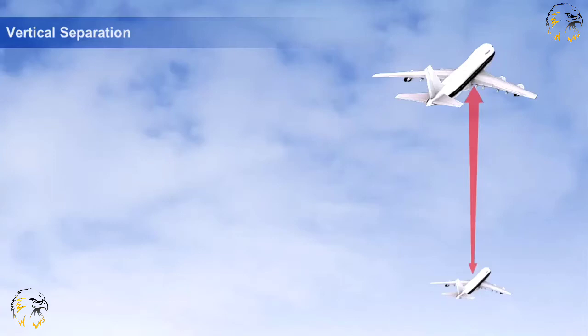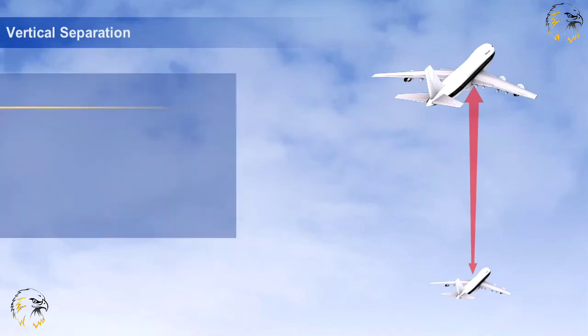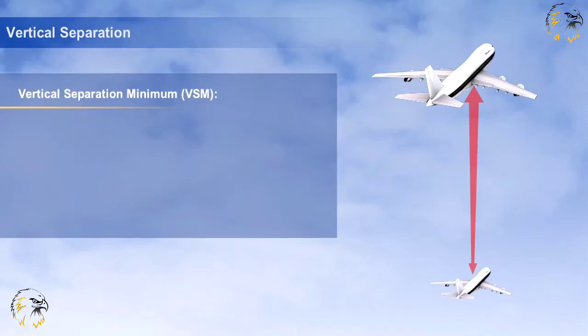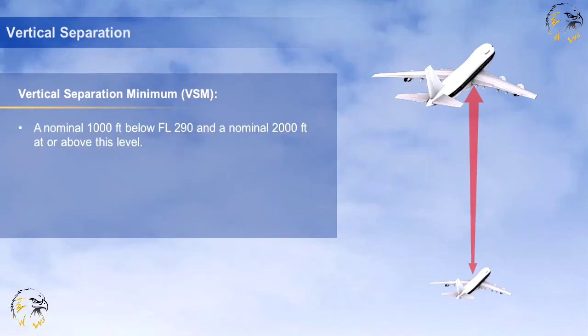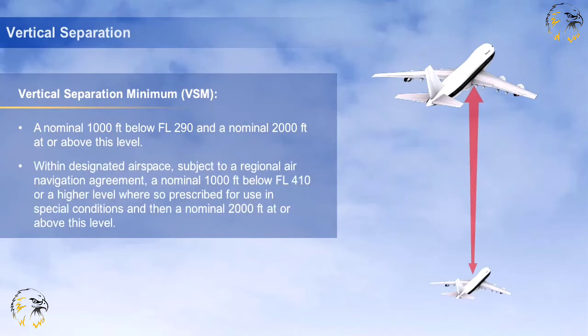Vertical separation is obtained by requiring aircraft using the same altimeter setting to fly at different levels expressed in terms of flight levels or altitudes. The vertical separation minimum is a nominal 1000ft below Flight Level 290 and a nominal 2000ft at or above this level. Within designated airspace subject to a regional air navigation agreement, a nominal 1000ft below Flight Level 410, or a higher level where so prescribed for use in special conditions, and then a nominal 2000ft at or above this level.